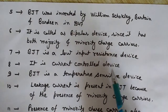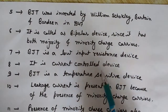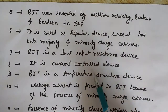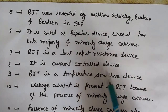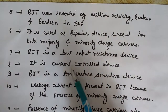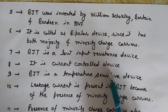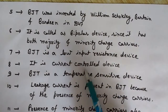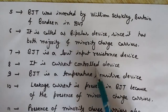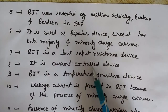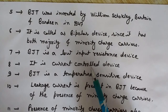BJT is a current controlled device. The base current IB controls the flow of current from the emitter to the collector — meaning the emitter and collector currents are controlled by the base current. It is therefore a current controlled current device. In contrast, MOSFETs and FETs are voltage controlled devices, where the gate voltage controls the drain current.